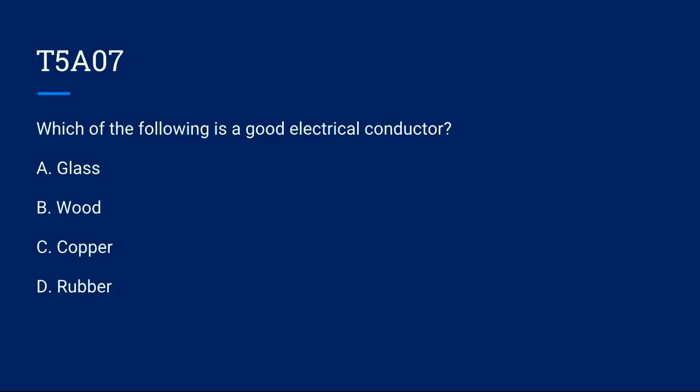T5A07, which of the following is a good electrical conductor? A. Glass, B. Wood, C. Copper, or D. Rubber? The correct answer is C. Copper. Conductors carry electricity, and copper is a great conductor. T5A08, which of the following is a good electrical insulator? A. Copper, B. Glass, C. Aluminum, D. Mercury. The correct answer is B. Glass. Glass is a good insulator.